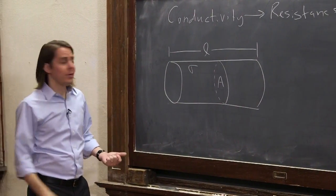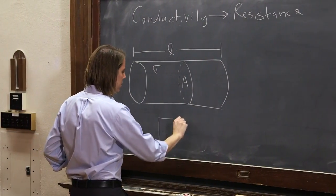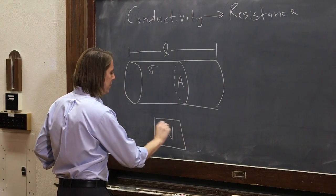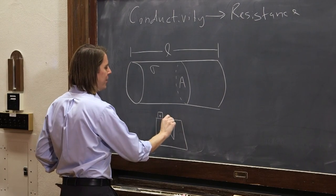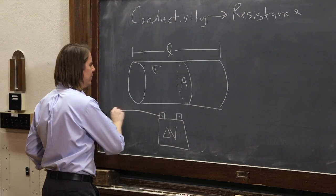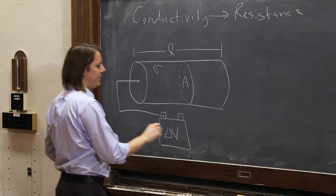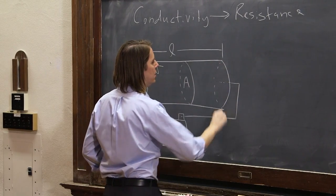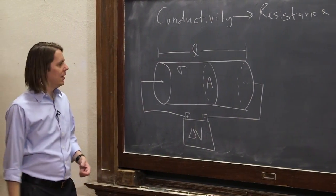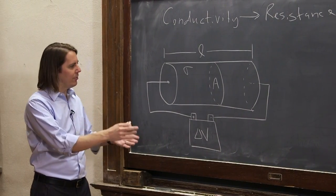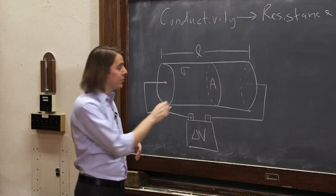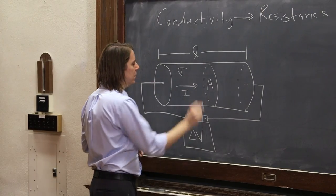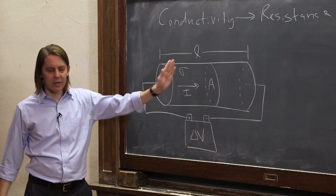We want to make current flow, so we've got to put a battery on here. Here is a battery, delta V between its positive terminal and its negative terminal. It comes up here, touches that face. This one comes back here and touches that face. That sets up an electric field and makes a current flow. Current is always from the positive side to the negative side.